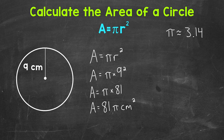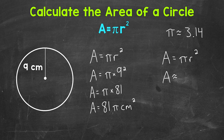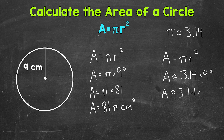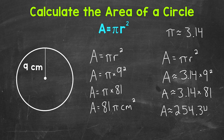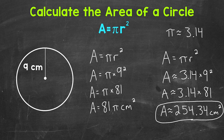Let's go through our process. Write out the formula: area equals pi r squared. Then plug everything in — area is approximately 3.14 times 9 centimeters squared. 9 squared equals 81, so we end up with 3.14 times 81. That gives us an approximate area of 254.34 square centimeters. That's an approximate area because we used an approximate version of pi.